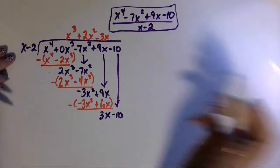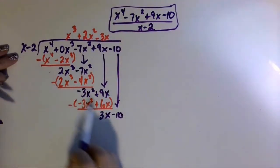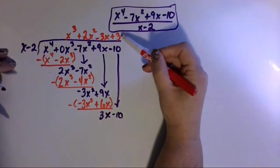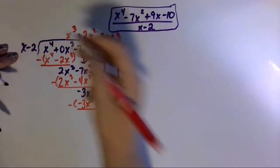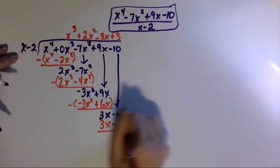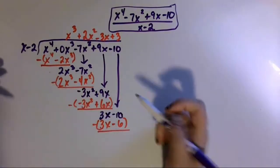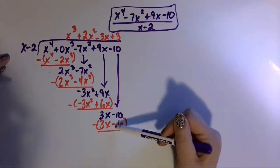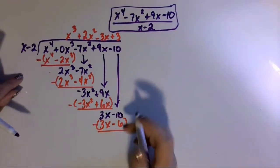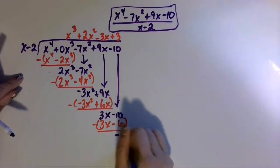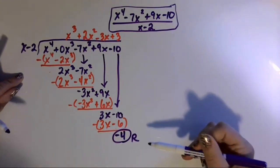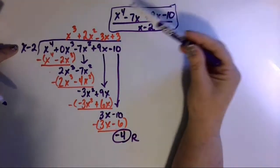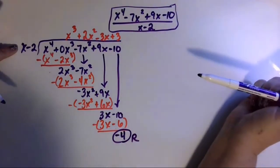Last repetition of the algorithm: what do we multiply times x to get 3x? That would be positive 3. Multiply: 3 times x is 3x; 3 times negative 2 is negative 6. Draw a line, change the sign, and combine like terms. 3x minus 3x cancels. Negative 10 minus a negative 6 gives a remainder of negative 4. Since the remainder is not 0, we know that x minus 2 is not a factor of the polynomial.